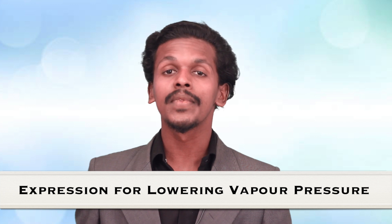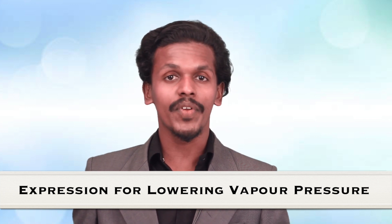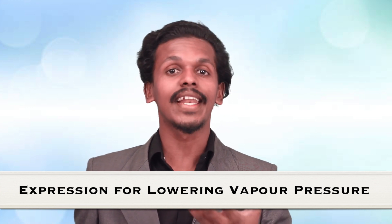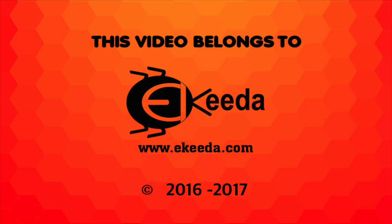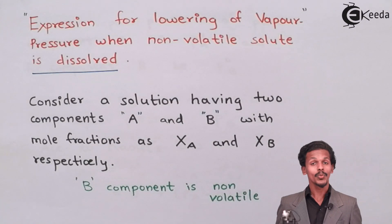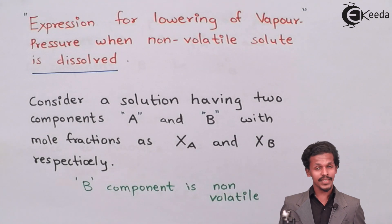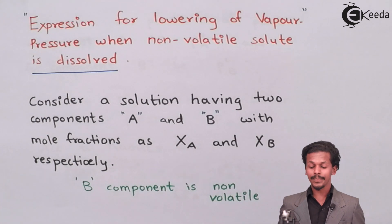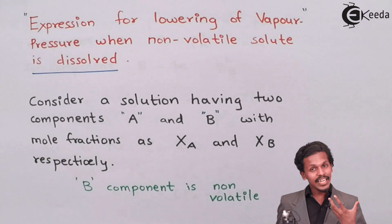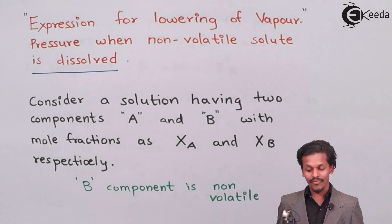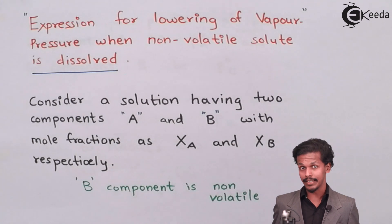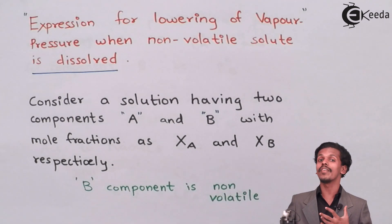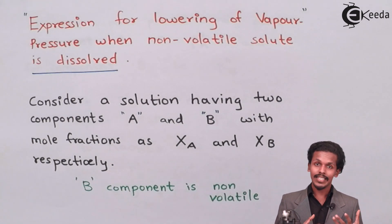So let us start with the relative lowering of vapor pressure and the related equation. As on your screen, you can see that we are now going to express a relation between the lowering of vapor pressure when a non-volatile solute is present. So will the vapor pressure be lowered or will it be higher? Let us see.